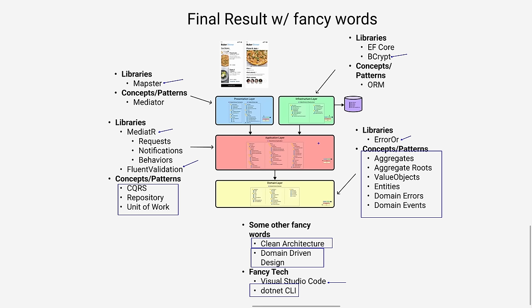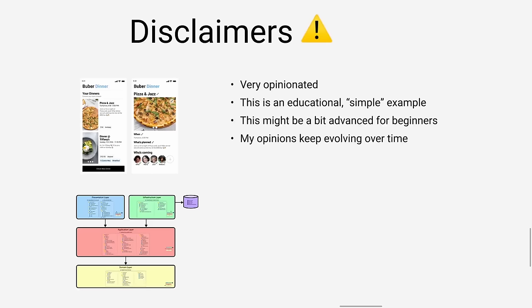That's so you can replace infrastructure without changing your core logic. This is specifically Jason Taylor's clean architecture model. You'll see many variations, but the core concept is the same. In both representations, you have the presentation and infrastructure taking a dependency on the application, and at the core you have your domain. I don't want you to memorize what's in every layer — I want us to develop an intuition.